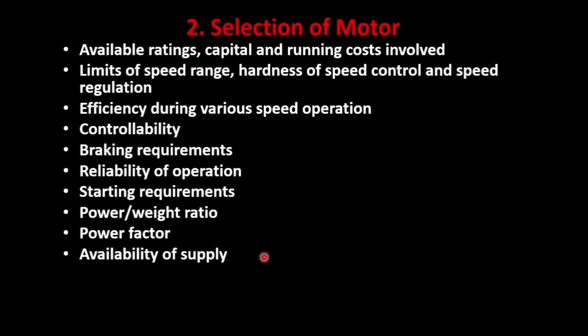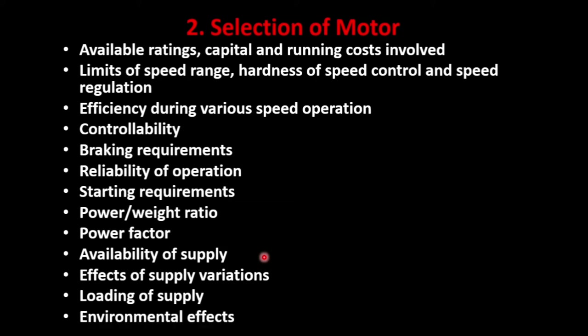Availability of supply is another factor — whether you need a DC motor or an AC motor. For robotics, DC is generally preferred; for production or manufacturing units, AC motors are used. Effects of supply variation, loading of supply, and lastly environmental effects — the motor must be capable of handling temperature and pressure variations. Considering all these factors, we select a motor.